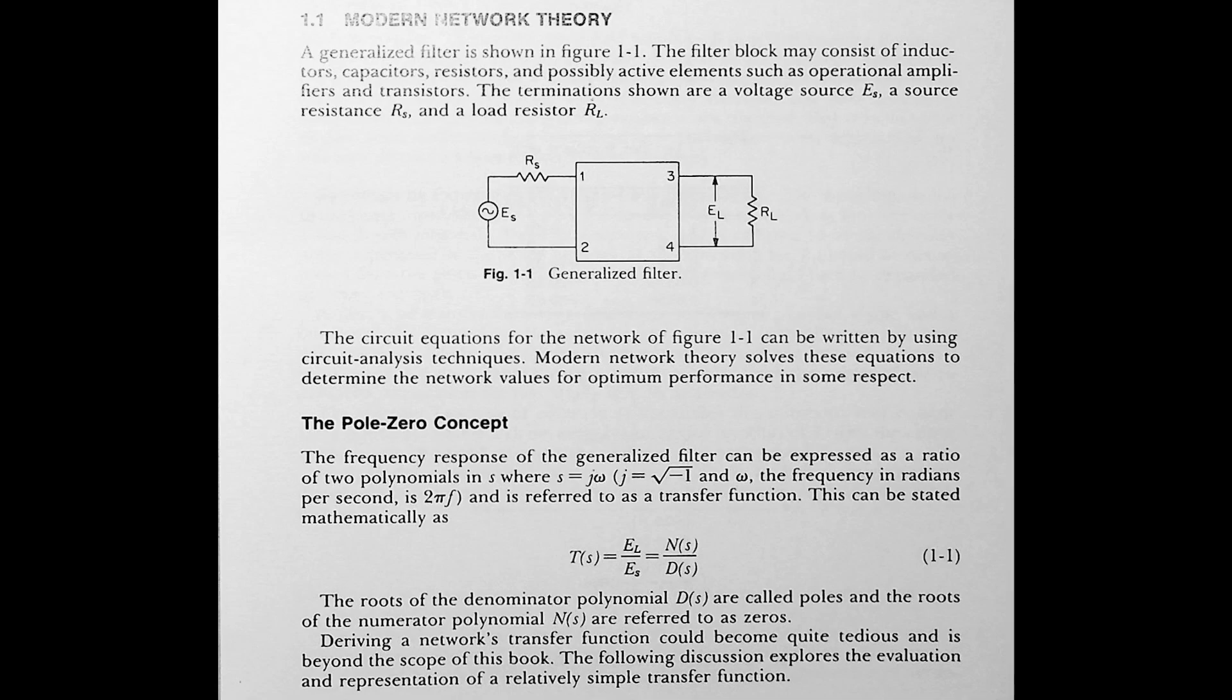If you have some transfer function, you start with something and you end up with something else. That could be gain, phase shift, or other things. You have this equation that is something divided by something. If the thing on the top ever ends up being zero, you call that a zero. If the thing on the bottom ever ends up being zero, you call that a pole. That's the idea of poles and zeros.